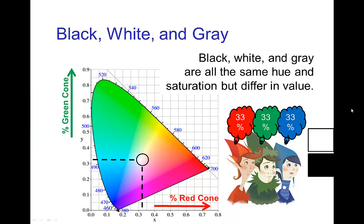On the CIE diagram it only maps hue and saturation — we don't have value; value would be in another dimension. In this diagram the center point is usually called the white point, but it is also the point for black and for grey. So black, white, and grey are all the same hue and they're all the same saturation — zero saturation. Black, white, and grey only differ in terms of value.